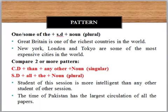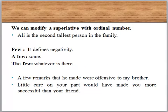The Times of Pakistan has a larger circulation than all the other papers. We can also modify the superlative with ordinary ordinal numbers. For example: the second largest person in the family. Here 'tallest' is qualified by 'second' — the ordinal number qualifies the superlative.